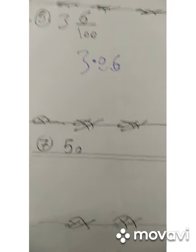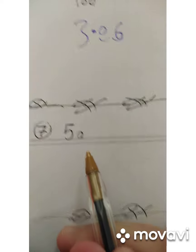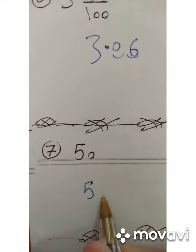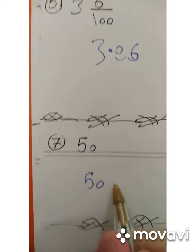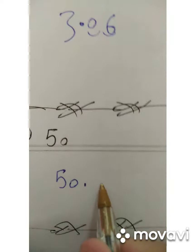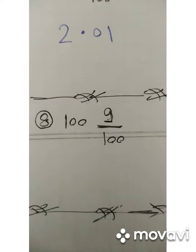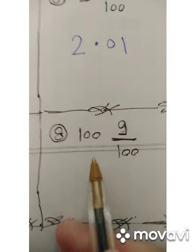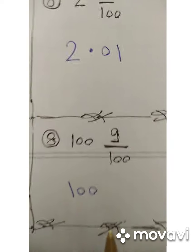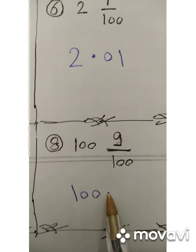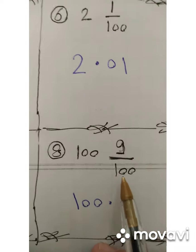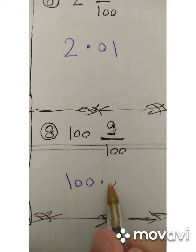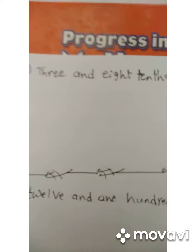Number seven: fifty. It is just a whole number, so write fifty and put the decimal point. There is no fraction, so put zero. Number eight: one hundred and nine hundredths. The whole is 100 — write 100, then put the decimal point. Nine hundredths means two digits, so put zero then nine. We get 100.09.